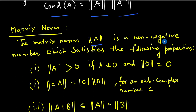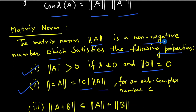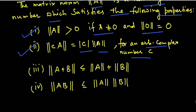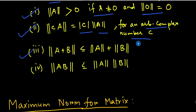The matrix norm of A is a non-negative number which satisfies the following properties. Property 1: norm(A) is always greater than zero if A ≠ 0, and norm(A) = 0 if and only if A = 0. Property 2: norm(cA) = |c| × norm(A) for an arbitrary complex number c.